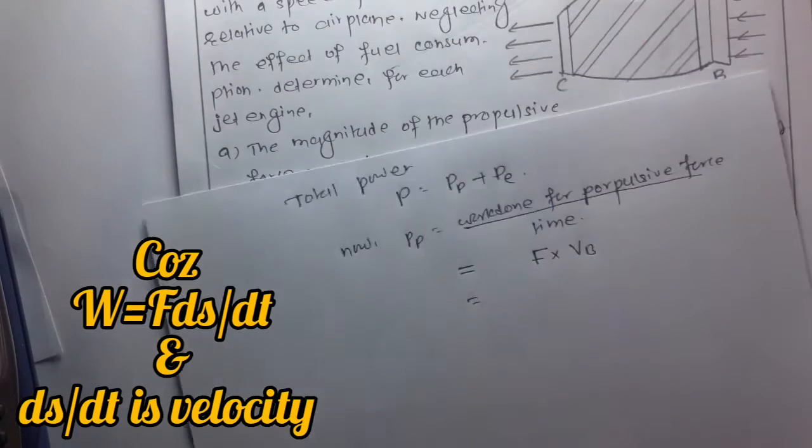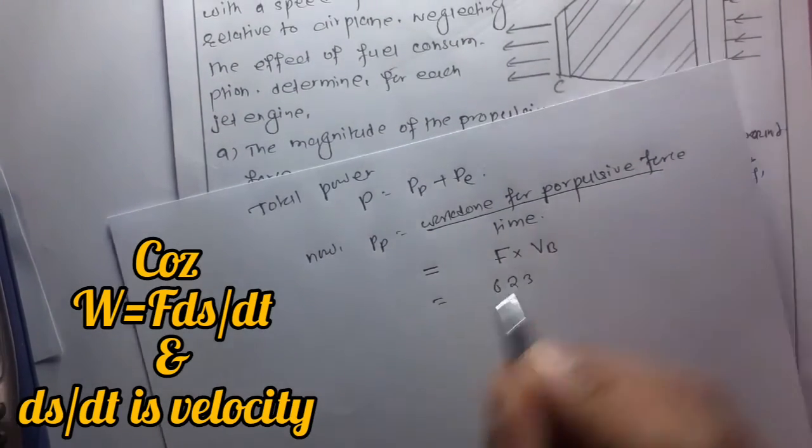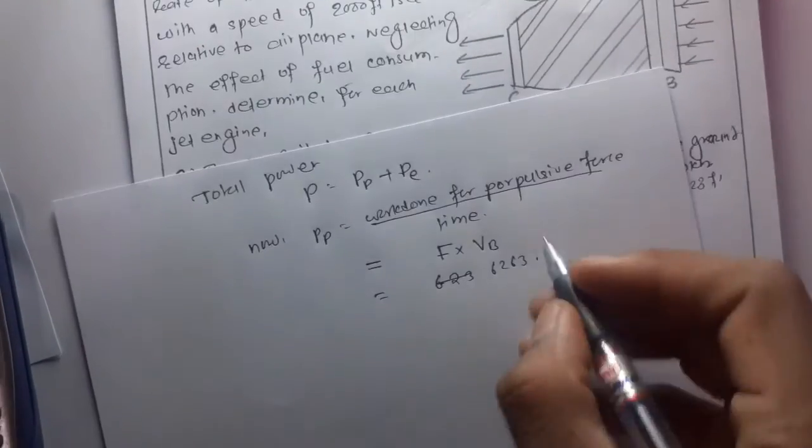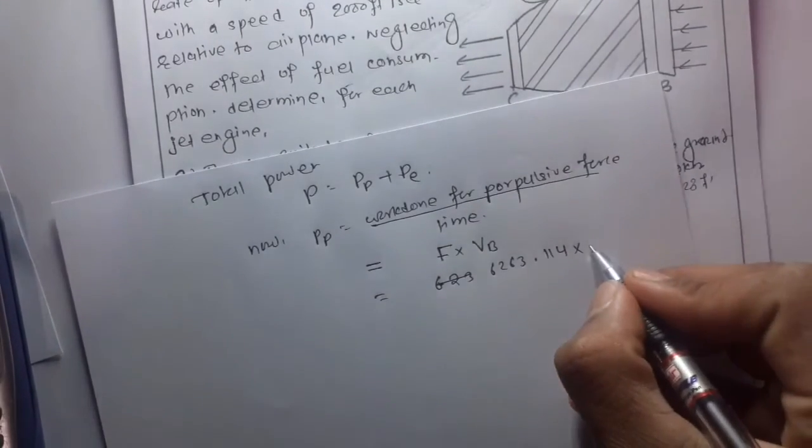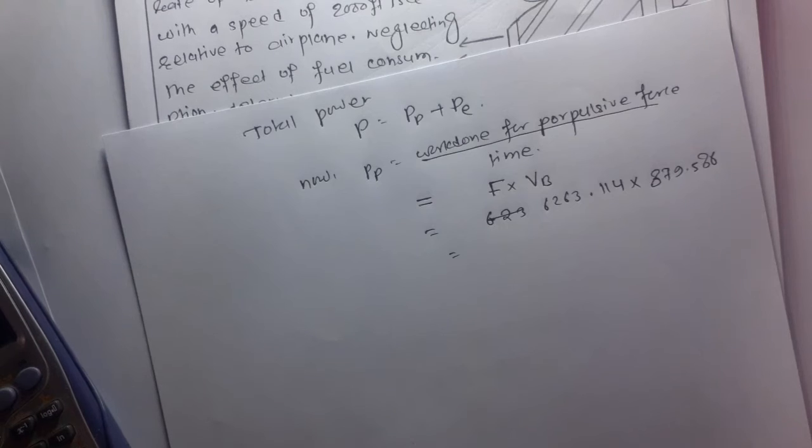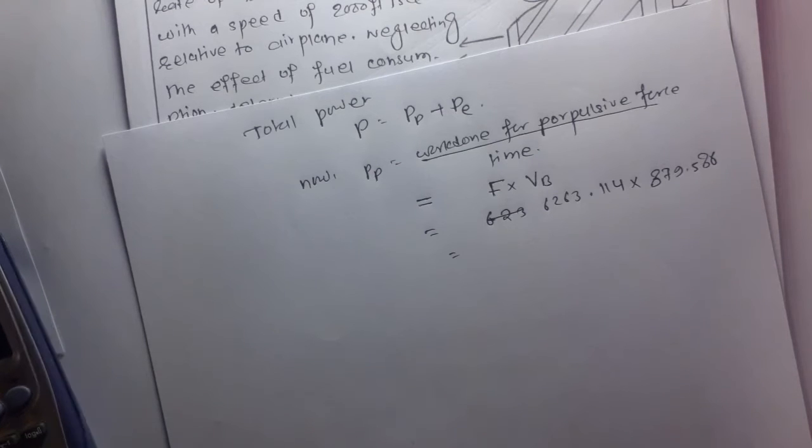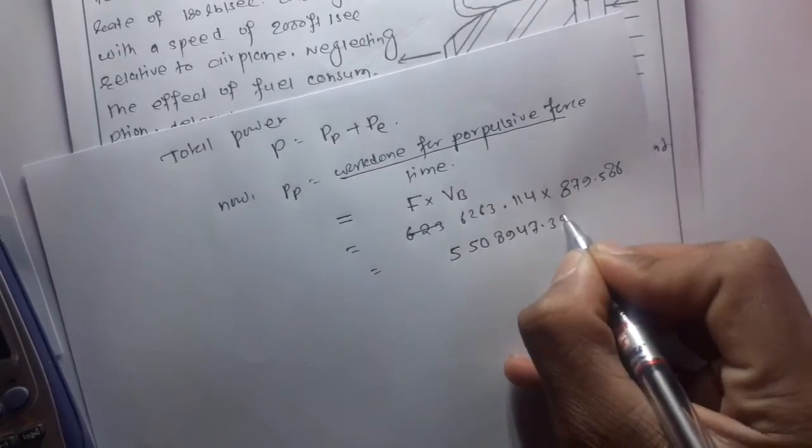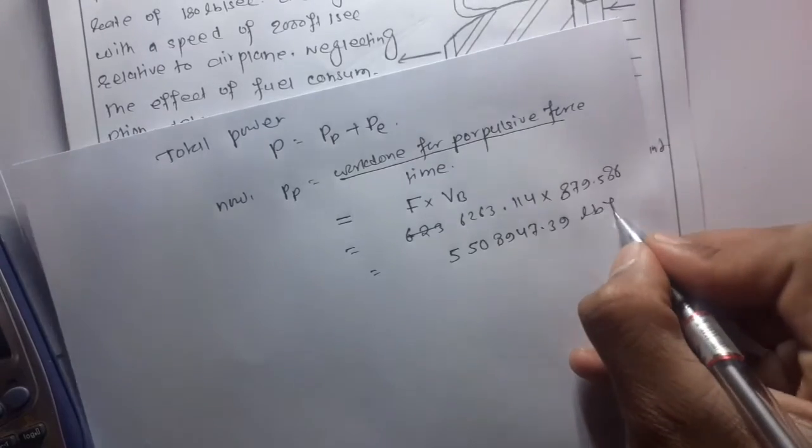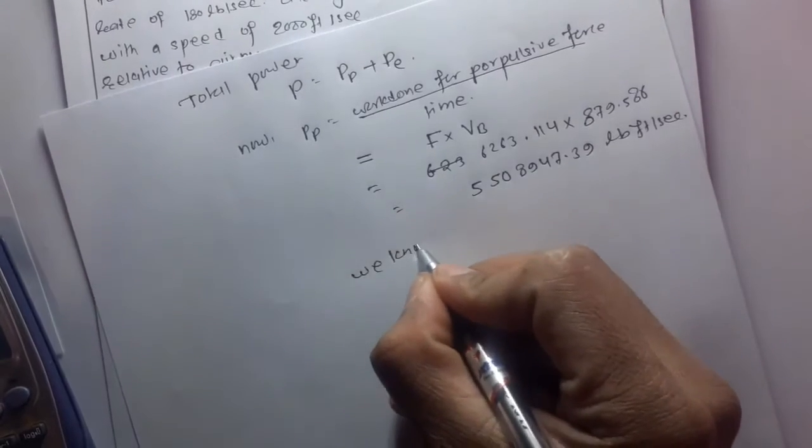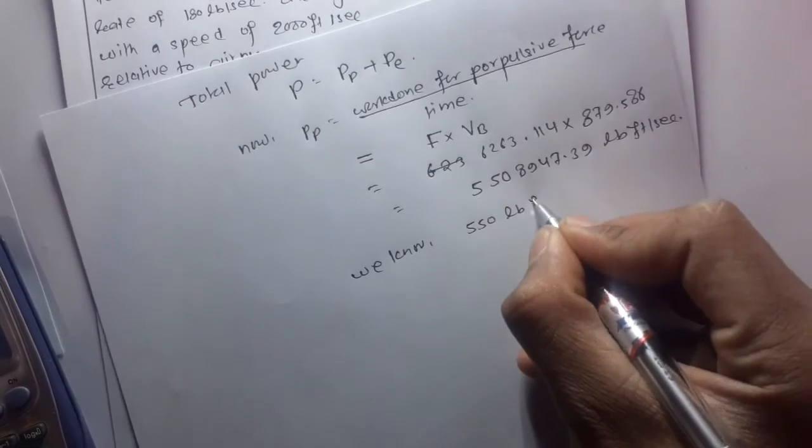Power of propulsion is given by work done for propulsive force over time, F times VB. So this is F, which is 6263.114 lb, times VB, which is 879.586, equals 5,508,947.29 lb-ft per second.